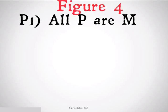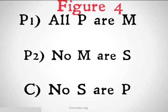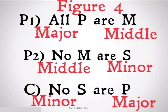Let's take a look. Figure 4 would look something like: all P are M, no M are S, therefore no S are P. We know this is figure 4 because our diagonal is going up — from the bottom left corner to the top right corner.